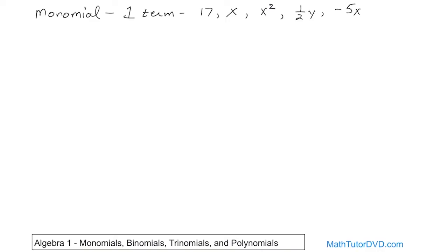Negative 5x squared y squared — that is a monomial. Anytime you see something sitting by itself, joined by multiplication or exponents or whatever, if it's just one thing hanging out by itself, we call it a monomial. It means one term in algebra.